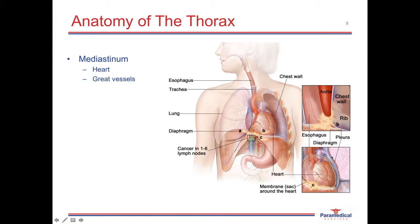Just as we have the pleural membrane surrounding the lungs, we also have the pericardium, which is a membrane or sac that surrounds and protects the heart and anchors it into the thorax.